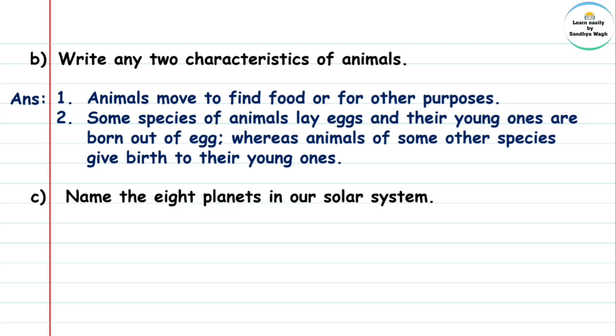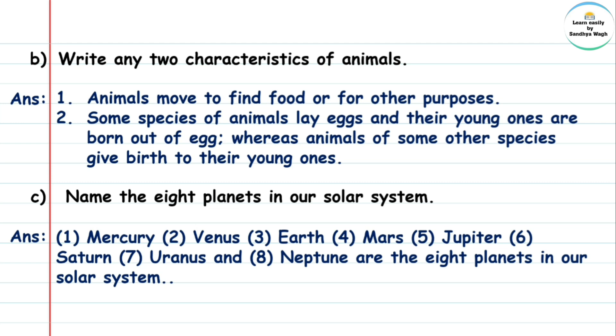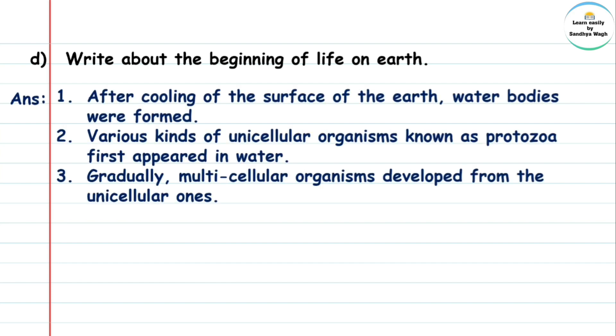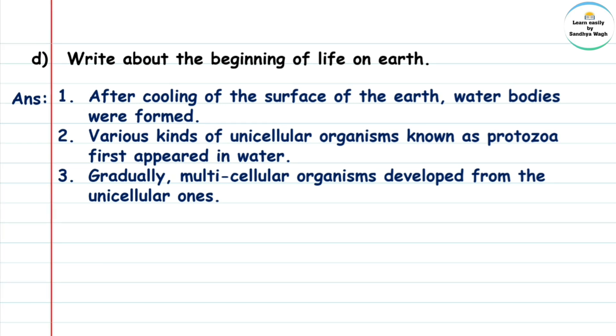Part c: Name the eight planets in our solar system. Mercury, Venus, Earth, Mars, Jupiter, Saturn, Uranus, and Neptune are the eight planets in our solar system. Part d: Write about the beginning of life on Earth. Answer: After cooling of the surface of the Earth, water bodies were formed. Various kinds of unicellular organisms known as protozoa first appeared in water. Gradually, multicellular organisms developed from the unicellular ones.